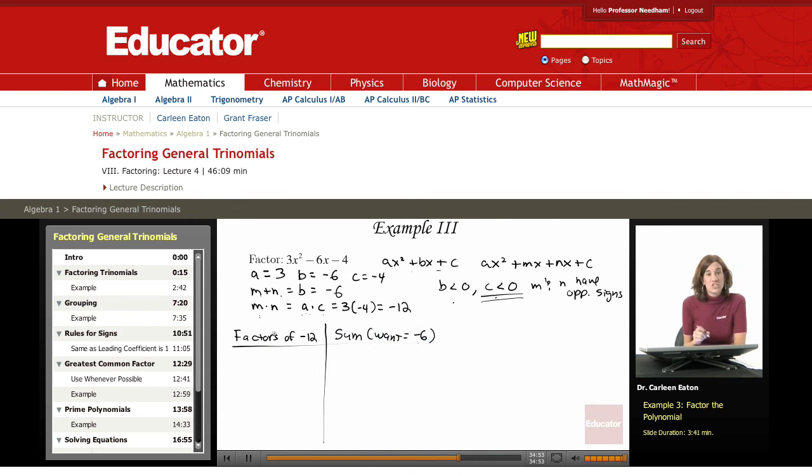If I find these, if I meet these two conditions, I've found m and n. And I remember that m and n have opposite signs. So I have 1, negative 12, and that's going to give me negative 11.